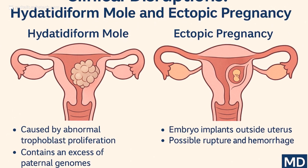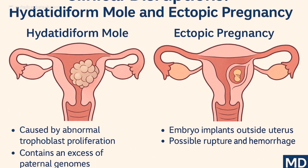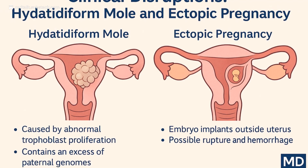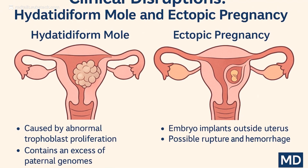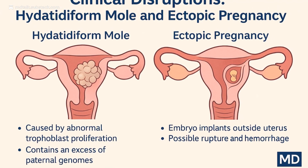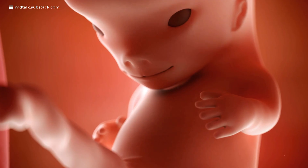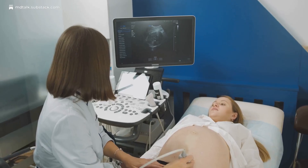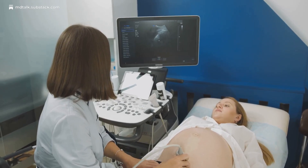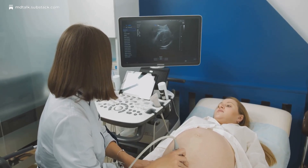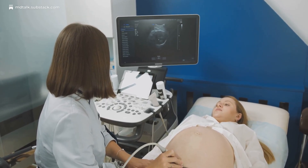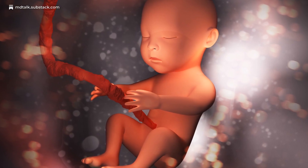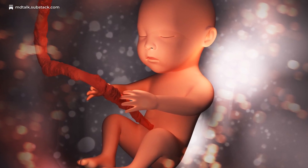Hydatidiform moles are abnormal growths of trophoblast tissue. A complete mole contains no fetal tissue and is purely paternal in origin. A partial mole contains triploid tissue and may present with malformed fetal parts. In both cases, elevated beta-HCG levels and a snowstorm ultrasound pattern are telltale signs. These carry a risk of choriocarcinoma, warranting close monitoring.